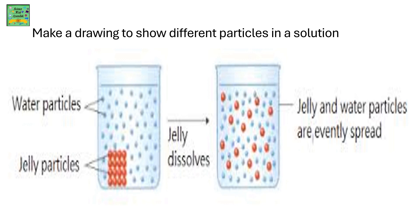Make a drawing to show different particles in a solution. In the first beaker, you can observe that the particles of water and jelly are present. The water particles being liquid are present a little bit far apart compared to the jelly particles. But jelly being solid is tightly packed together. As we mix the solute and solvent together, jelly dissolves. When jelly dissolves, the jelly and water particles are evenly spread throughout, forming the homogeneous mixture.